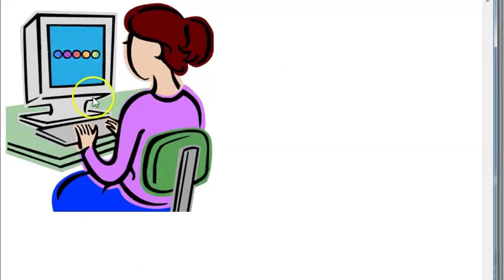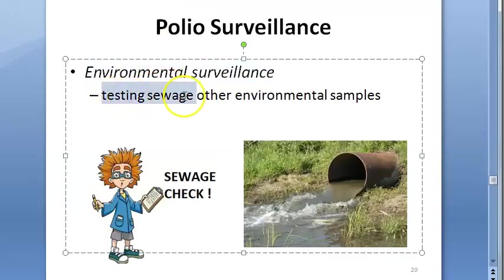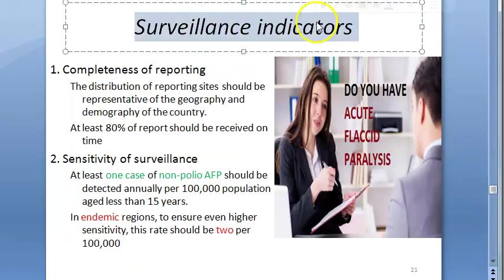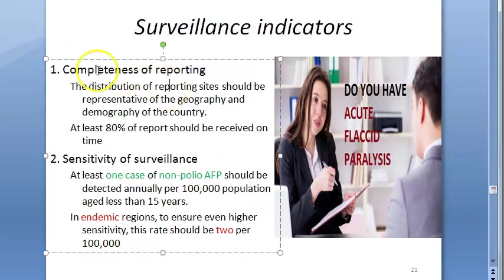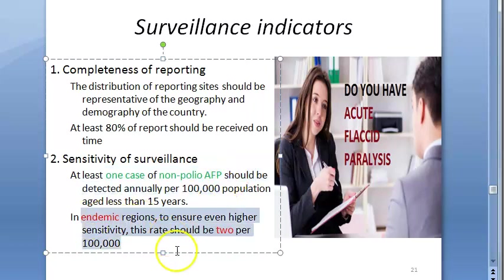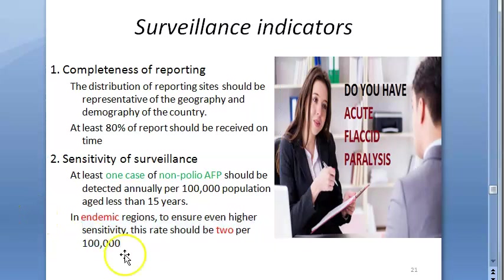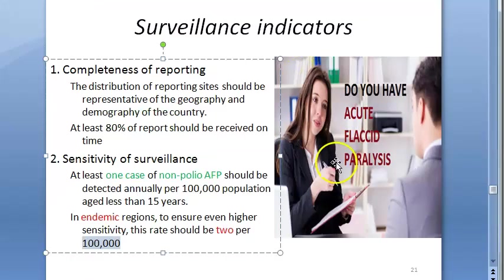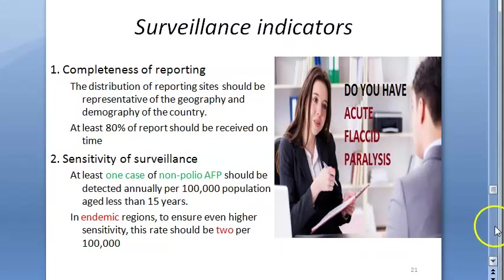There are two types of surveillance: AFP (acute flaccid paralysis) surveillance and environmental surveillance, where sewage is tested. Indicators of good surveillance include completeness of reporting and sensitivity — you should find at least one AFP case per 100,000 population, and at least two cases per 100,000 in endemic regions.